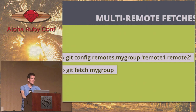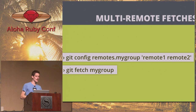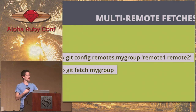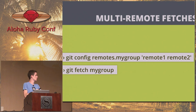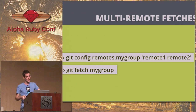Multi-remote fetches: if you have a bunch of different repositories you're working on, you can set up a group in your git config and then fetch that group by saying git fetch my-group. That will go in and fetch remote-one and remote-two. Useful if you're in that situation.